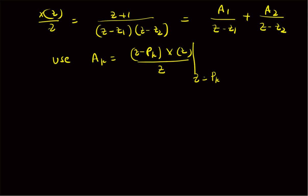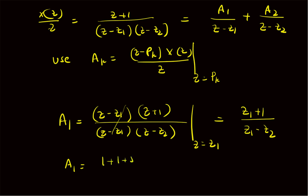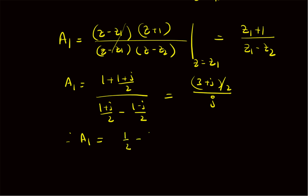This formula will give us the values of the coefficients. For example, A1 will be equal to Z minus Z1 multiplied by Z plus 1, divided by Z minus Z1 times Z minus Z2, with Z substituted as Z1 — that is, we replace Z with Z1. So A1 will be equal to simply Z1 plus 1 by Z1 minus Z2. By using the results for Z1 and Z2, we can show that A1 will be equal to 1 plus (1 plus J) by 2, divided by the difference (1 plus J by 2) minus (1 minus J by 2), which gives 3 plus J by 2 divided by J. Therefore, upon simple algebra, A1 will be equal to 1 by 2 minus 3 by 2 J.